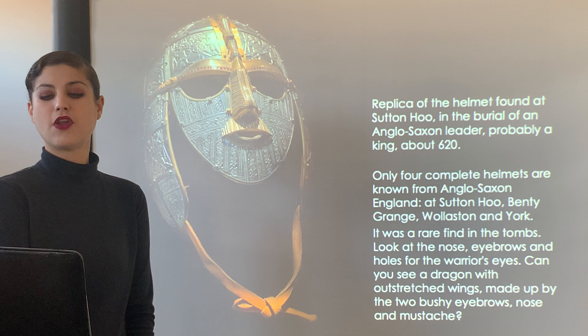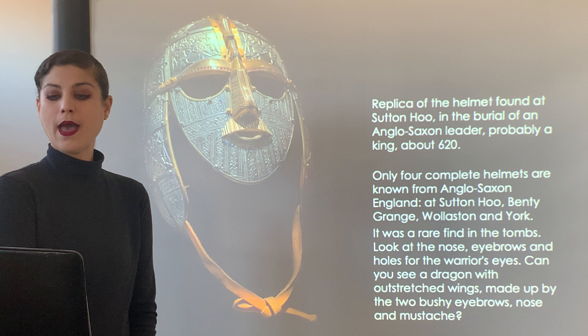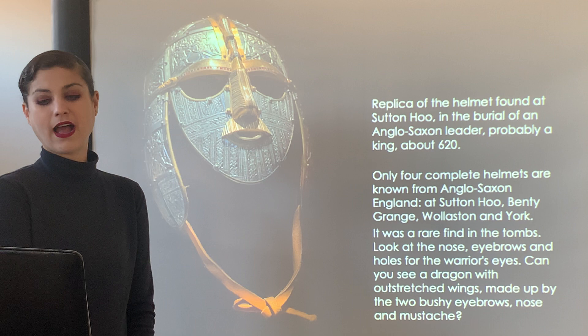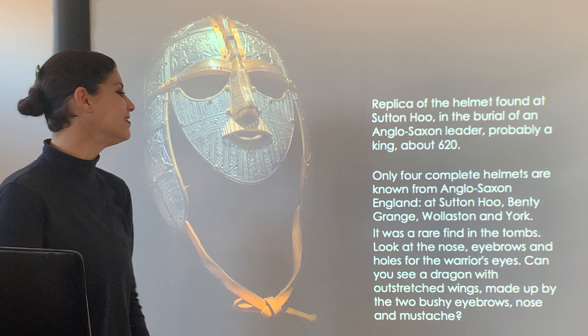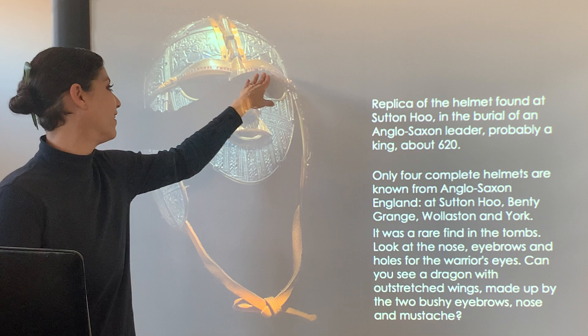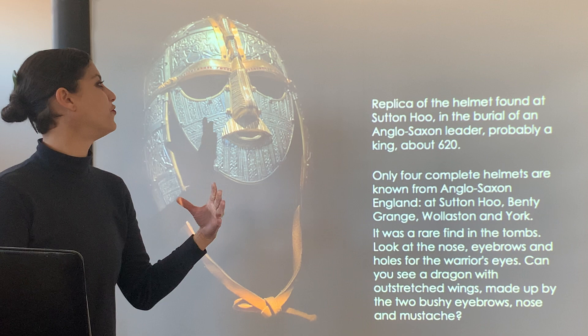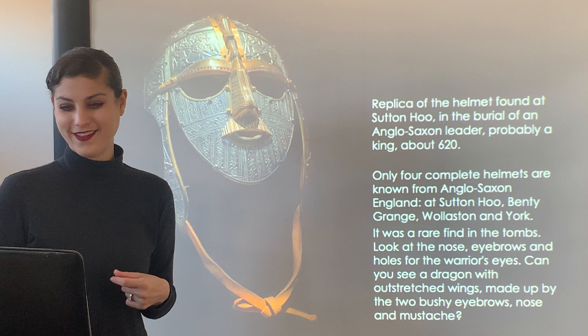Only four complete helmets are known from Anglo-Saxon England — at Sutton Hoo, Bentley Grange, Walson, and York. It was a rare find in the tombs. Looking at the nose, eyebrows, and holes for the warrior's eyes, you can even see a dragon with outstretched wings made up by the two bushy eyebrows, the nose, and the mustache — a perfect example of zoomorphic imagery, where connecting the repetition of the geometry reveals a dragon flying over the king's face.